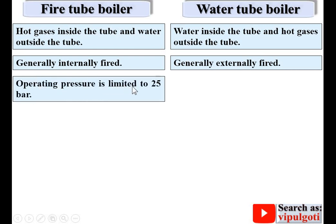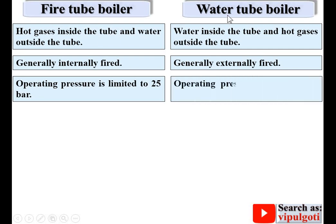Operating pressure is limited to 25 bar in case of a fire tube boiler. In case of a water tube boiler, operating pressure is high — up to 125 bar.